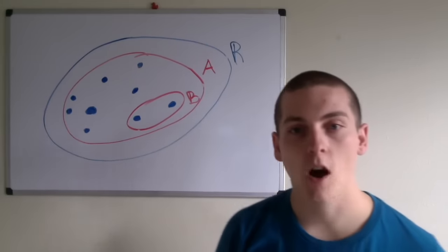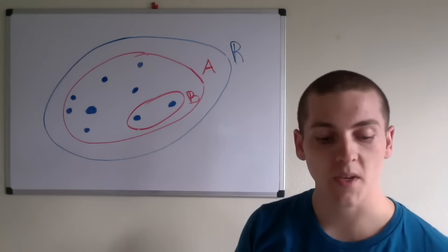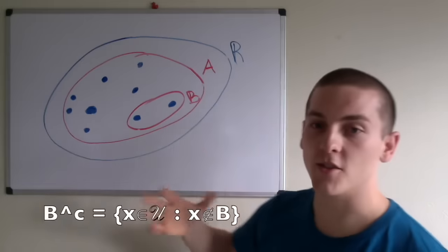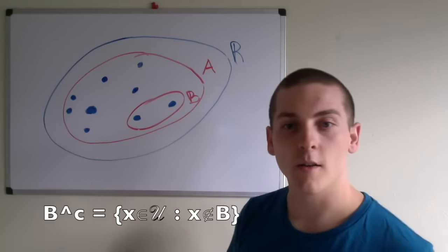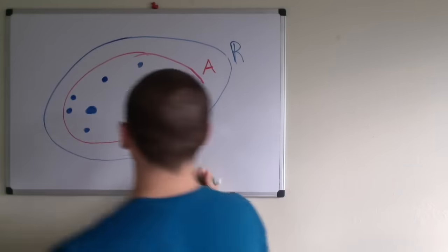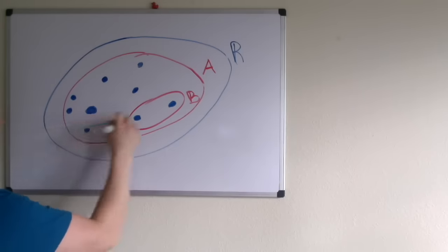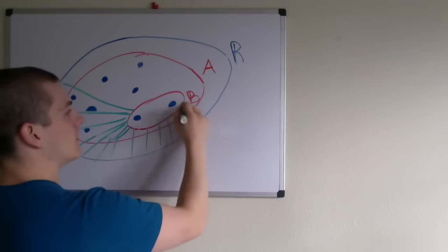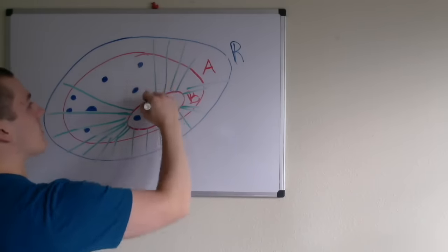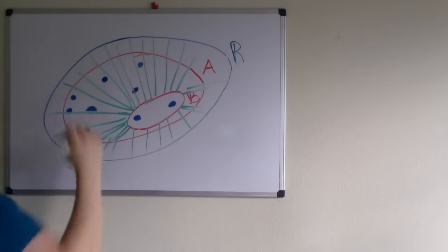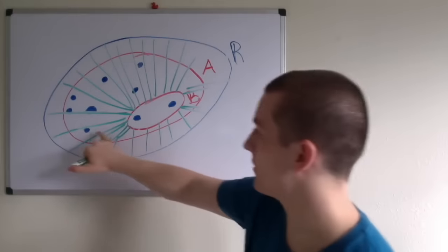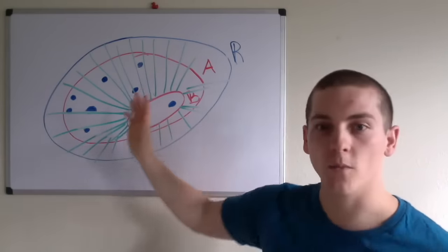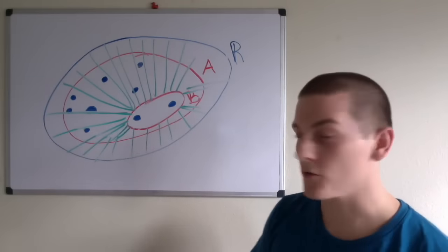The other thing I want to talk about is complements. If I'm looking for the complement of B, it is everything that is not within B. So all the elements not within B are going to be part of the complement. Since this is the real numbers, these little dots here would represent all the numbers — every single value, rational and irrational — that are not within B.